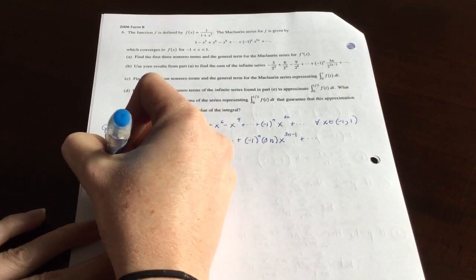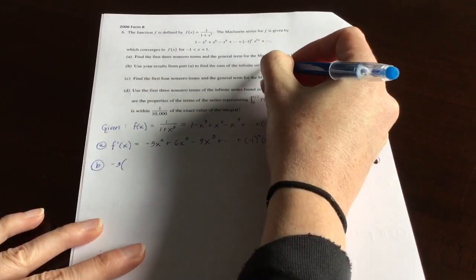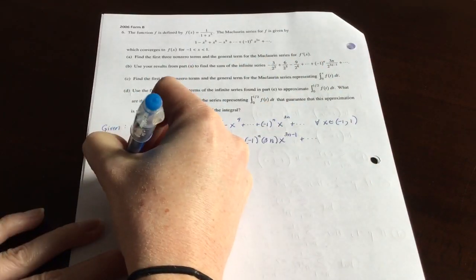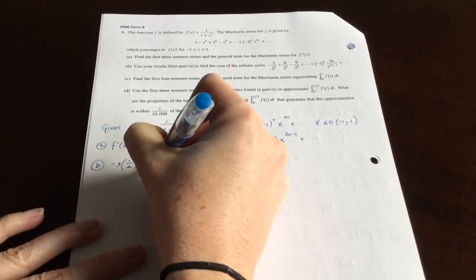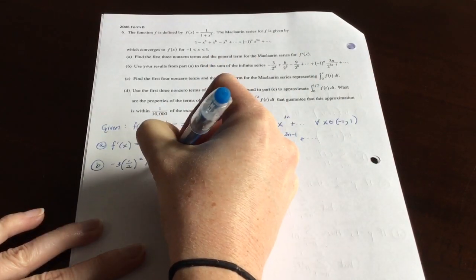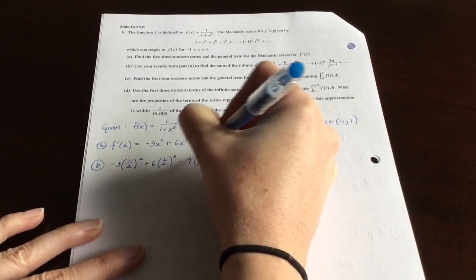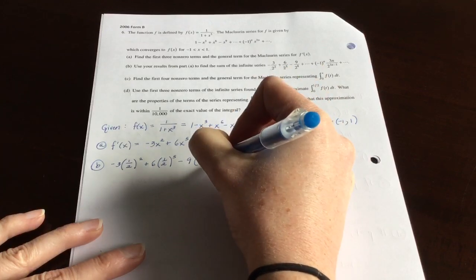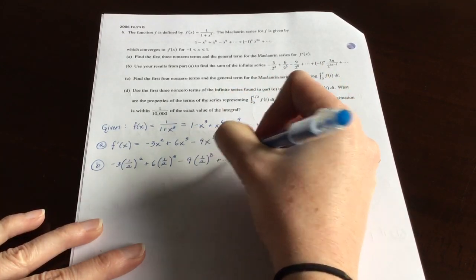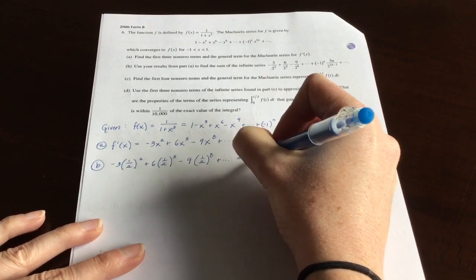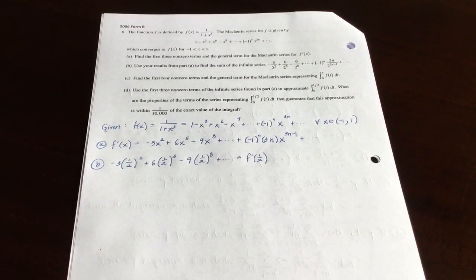They plugged something in for x to get this expression. They plugged in x equals 1 half. So you could kind of point that out, so we could say, hey, negative 3, and then I'm just going to rewrite this first term as negative 3 times 1 half squared plus 6 times, and then this could be thought of as 1 half to the 5th, and the next one minus 9 times 1 half to the 8th, and so on. What is that equal to? That is equal to our f prime expression where they plugged in 1 half.